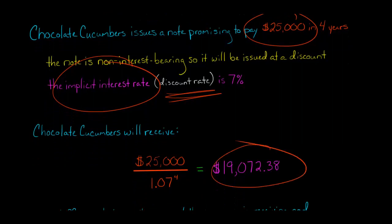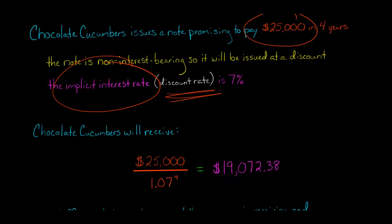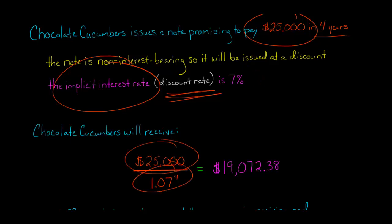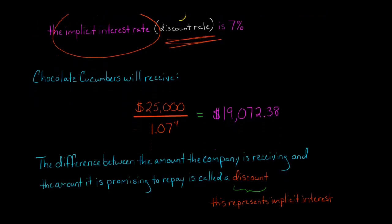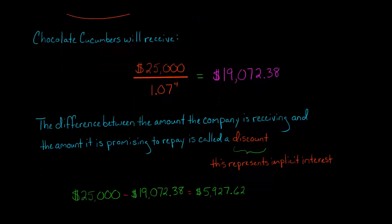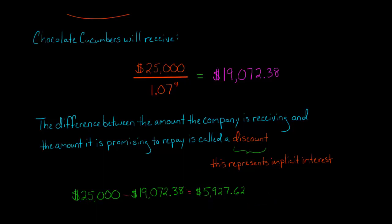Chocolate Cucumbers is going to receive $19,072.38. I got that by taking the present value of a single cash flow of $25,000 to be received four periods from now, with a discount rate of 7% — that's the implicit interest rate. So $25,000 divided by 1.07 to the fourth power. The difference between the amount they are promising to pay and the amount they're actually receiving is the discount — in this example, $5,927.62. That amount is implicit interest.